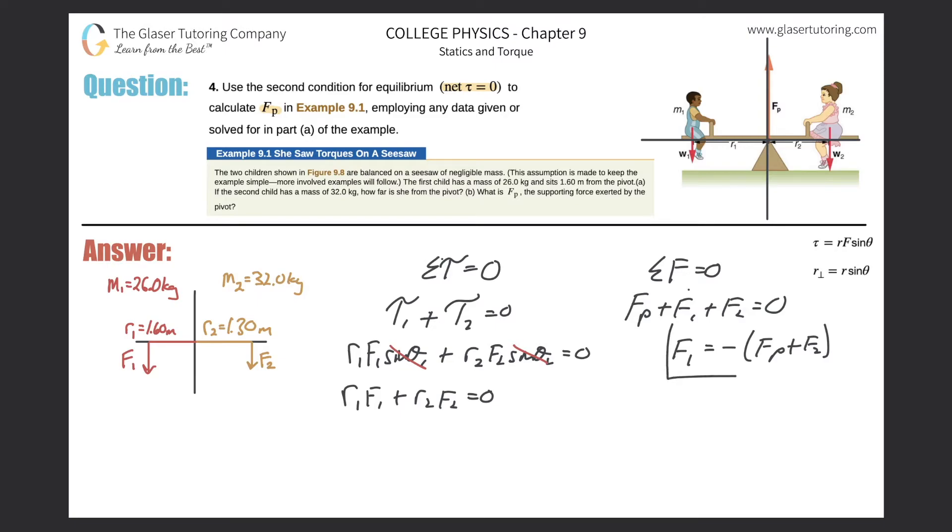Now what I'm going to do with this result is I'm going to take that result right here and plug it in for F sub one in my equation. So now it's going to be R one times negative F sub P plus F sub two, plus this term, R two F two equals zero.